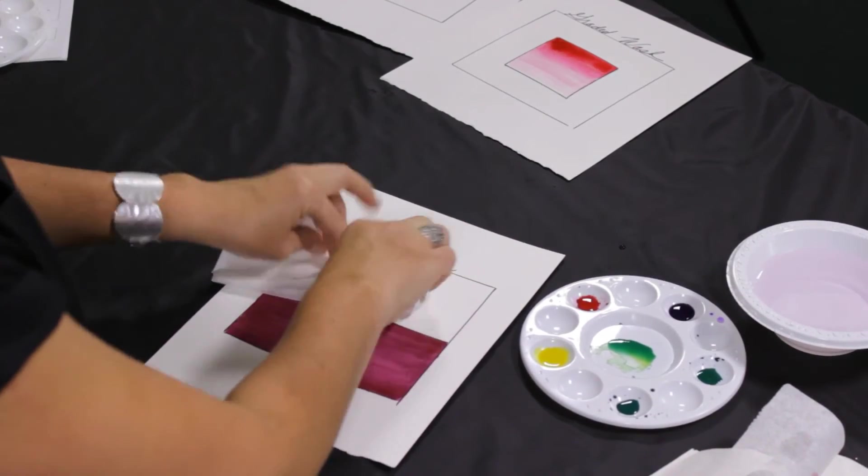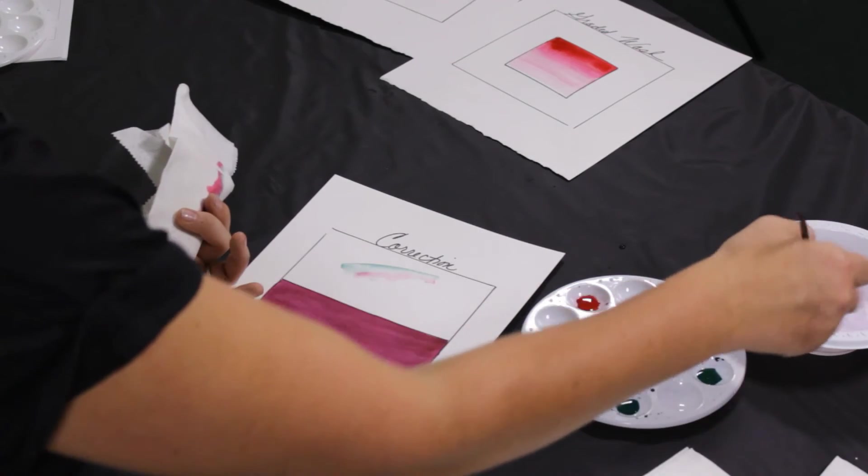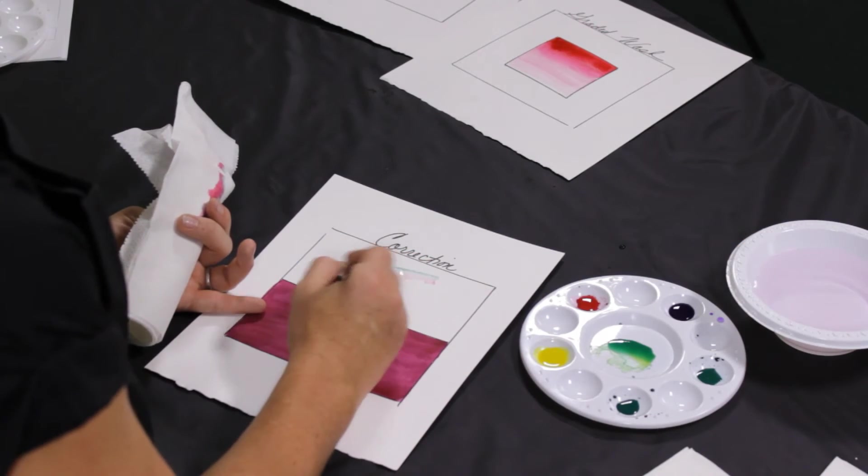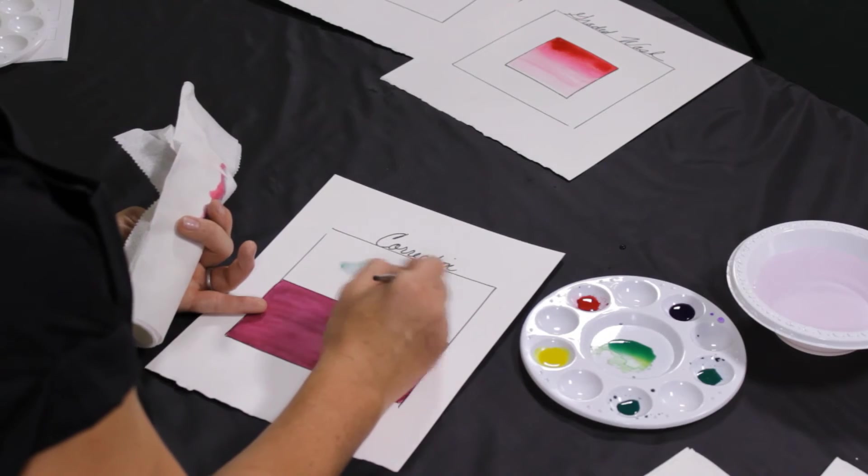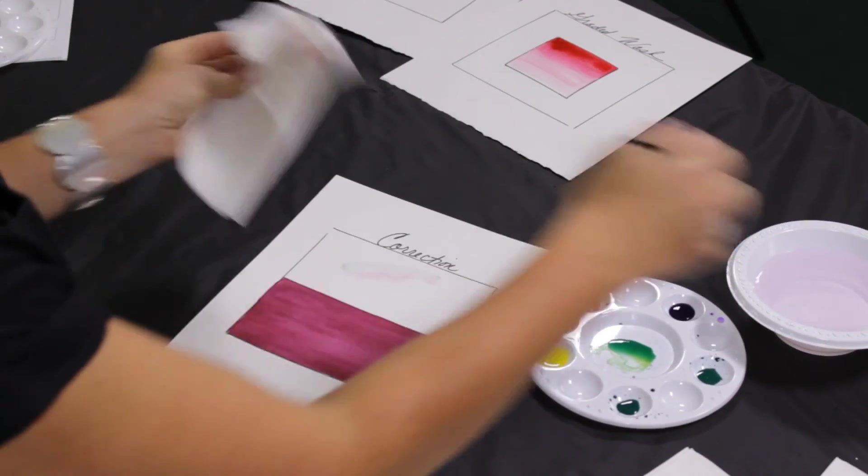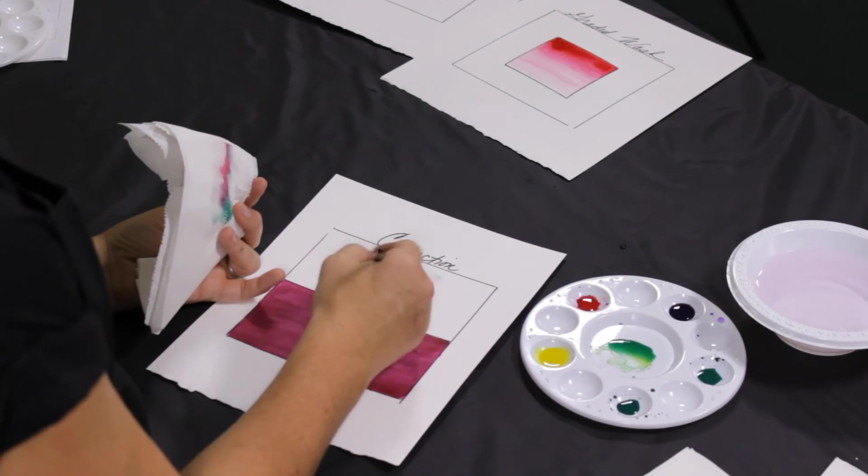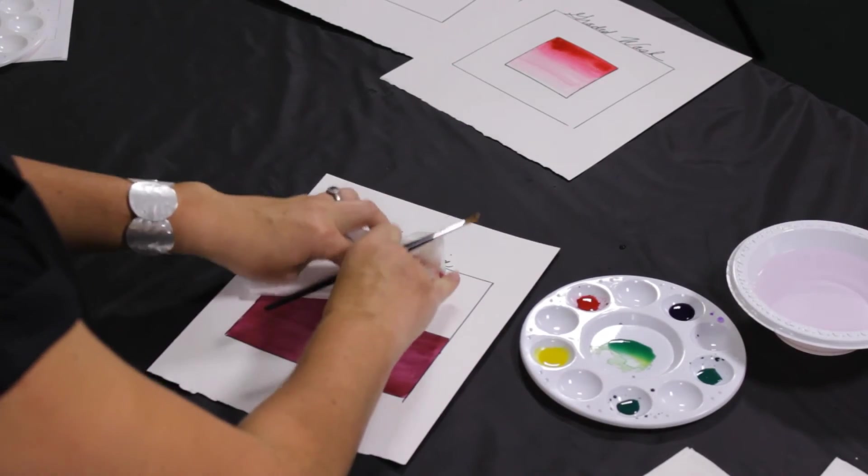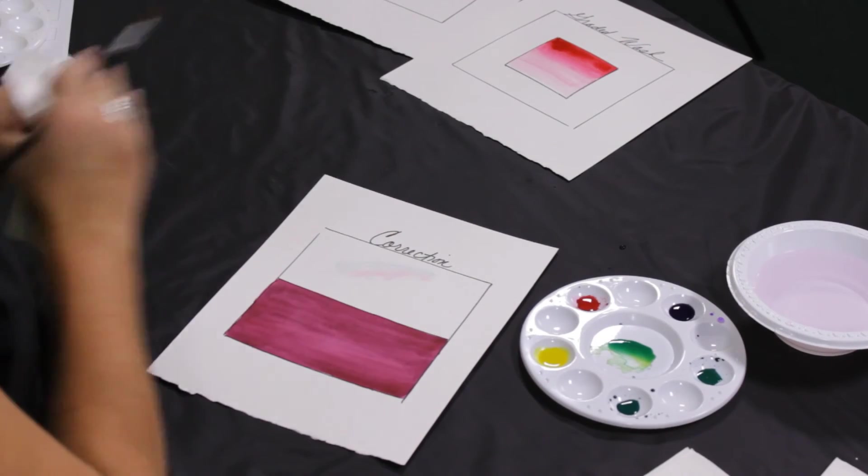Most watercolor paints will stain to some degree, but you can always apply more water to lighten and pull the color up. Okay, so you don't need to worry too much if you put the wrong color down or it's way too dark. You can always lift it back up.